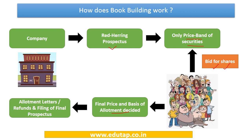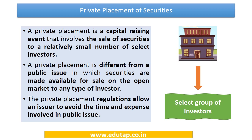Allotment is first made to persons bidding at the highest price, then going down. The company issues allotment letters to those allotted shares, and refunds are issued to those not allotted. Finally, the company files the final prospectus once the price, quantity, and allotment are all determined.